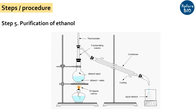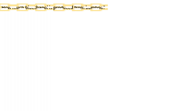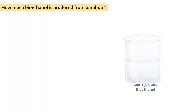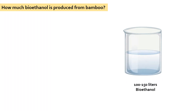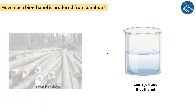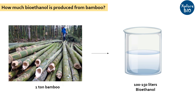During distillation, ethanol is heated up to evaporate first from the mixture and condensed into a separate container. About 100 to 150 liters of bioethanol can be produced using 1 ton of bamboo.